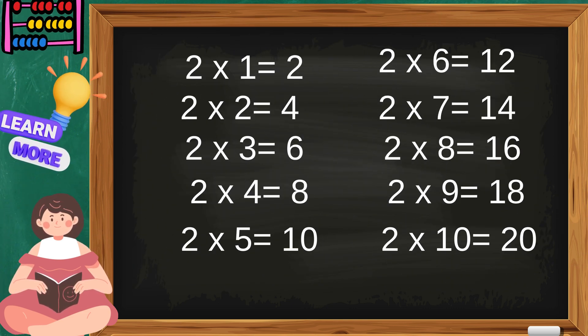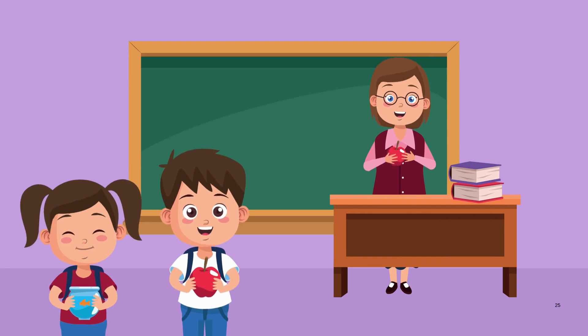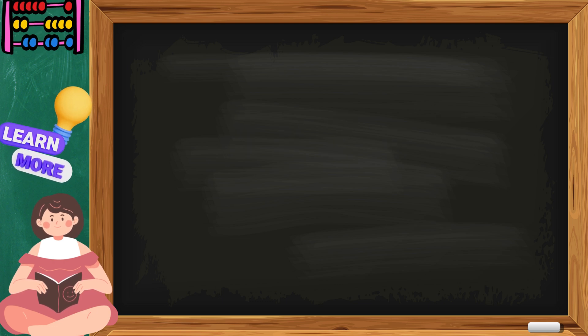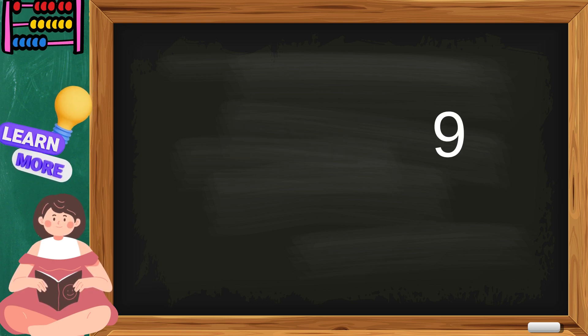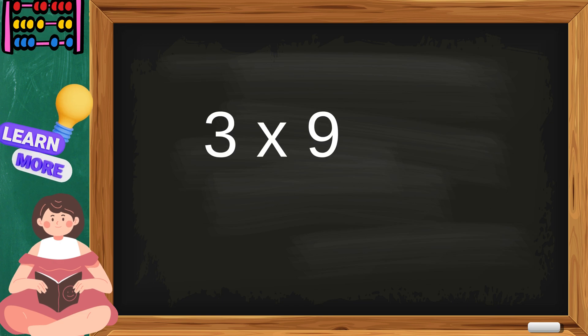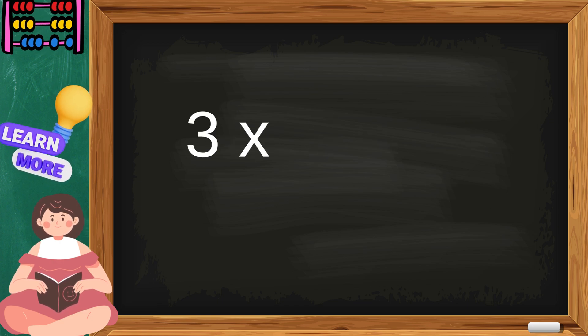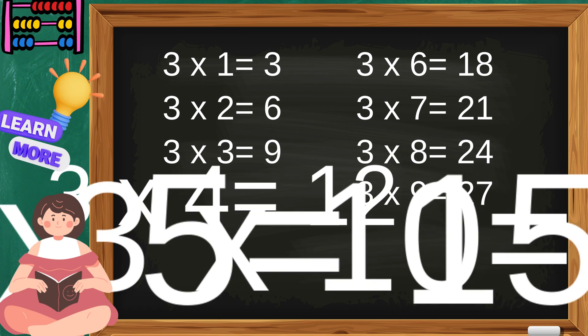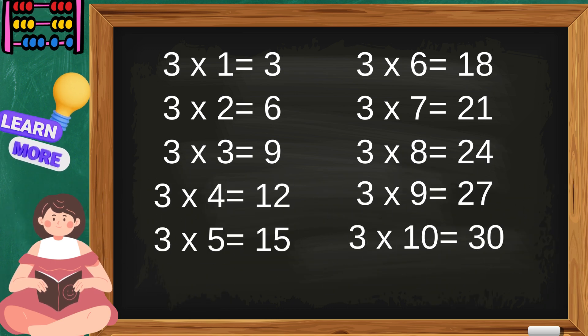That was the table of two. Three nines are twenty-seven, three tens are thirty. Children, sing with me now. Ready? Yes!